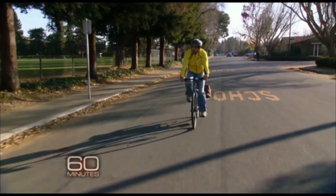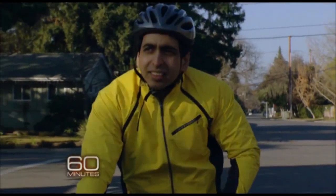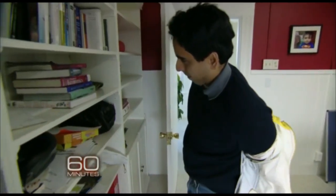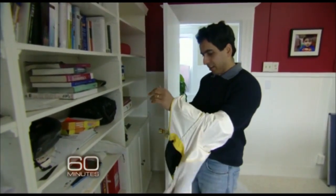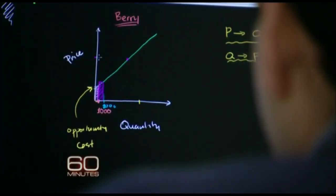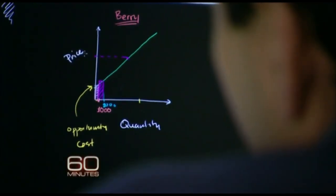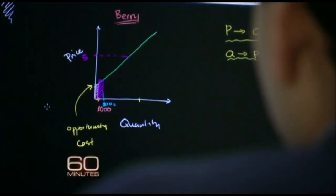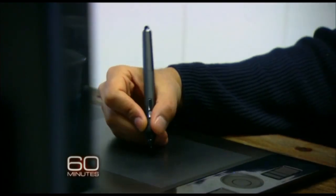35-year-old Sal Khan may look like a bicycle messenger, but with three degrees from MIT and an MBA from Harvard, his errand is intensely intellectual. In his tiny office above a tea shop in Silicon Valley, he settles in to do what he's done thousands of times before. He's recording a 10-minute economics lesson. It's so simple — all you hear is his voice, and all you see is his colorful sketches on a digital blackboard.